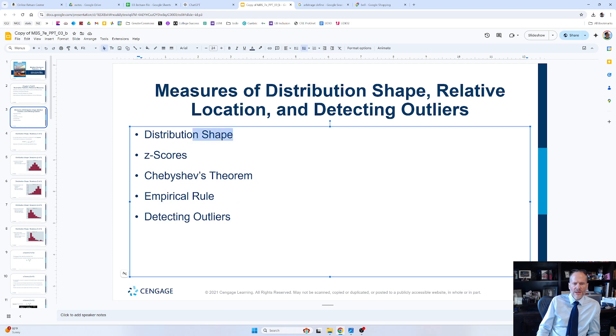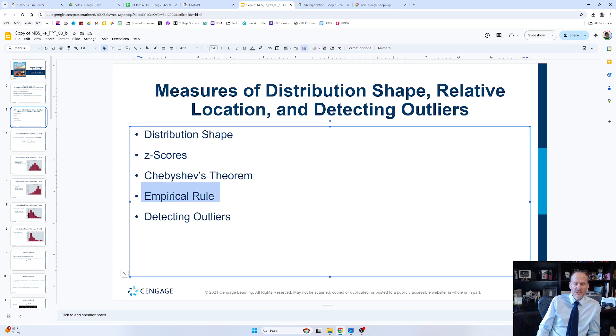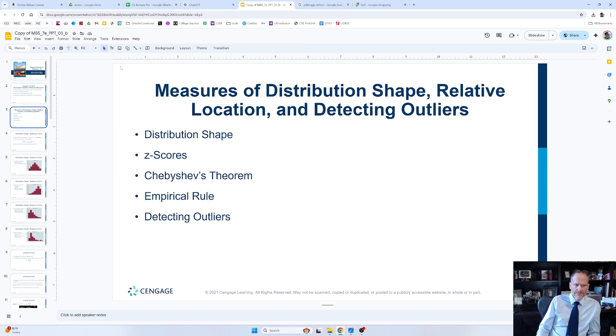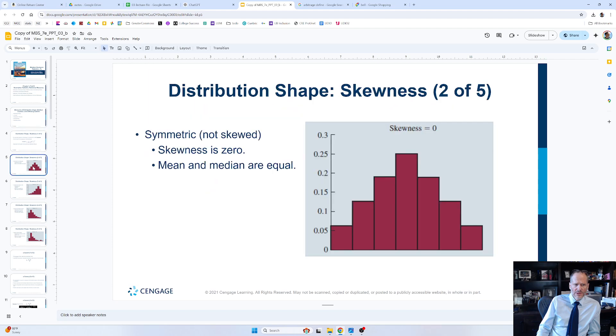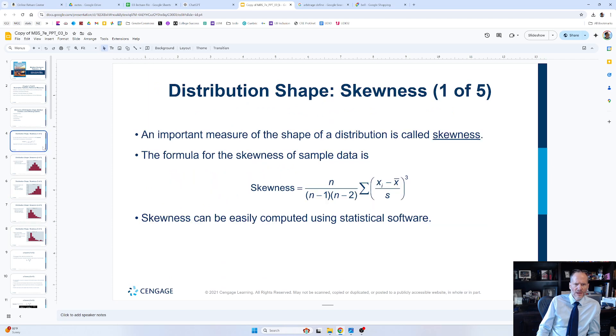Now we're going to talk about distribution of shape. We've already sort of talked about that a little bit with the empirical rule, talking about normal distribution, the bell curve. But now we're going to talk about it with these slides here, and this is just skewness. We looked at this a little bit when we looked at histograms, but there's a formula that you could use to calculate skewness.